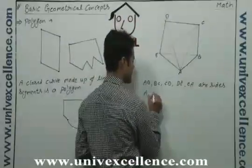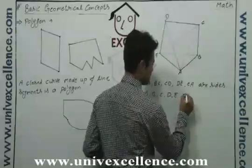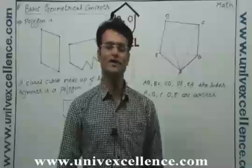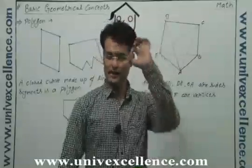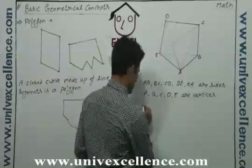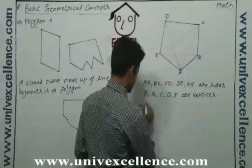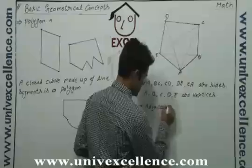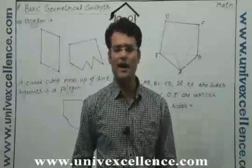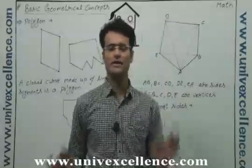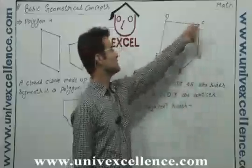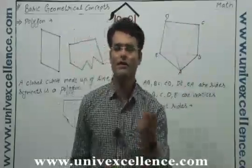Along with this, A, B, C, D, and E are the vertices of this polygon. All the corners of a polygon are known as vertices. Vertices is the plural form, and if we refer to a single one, that is a vertex. Then there is another term: adjacent sides. The sides having one vertex in common are adjacent sides, or we can say the nearby sides — they are neighbors. So AE and AB are adjacent, BA and BC are adjacent, and CD and CB are adjacent sides. The sides having one common vertex are adjacent sides.